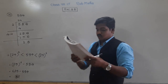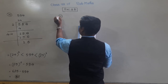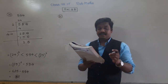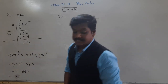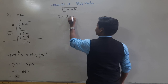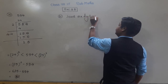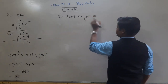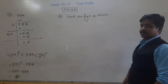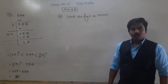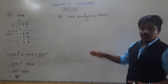Now see question number 21: Find the least number of six digits which is a perfect square. The smallest six-digit number is 100000, that is 1 lakh. But 1 lakh is not a perfect square because there are an odd number of zeros.